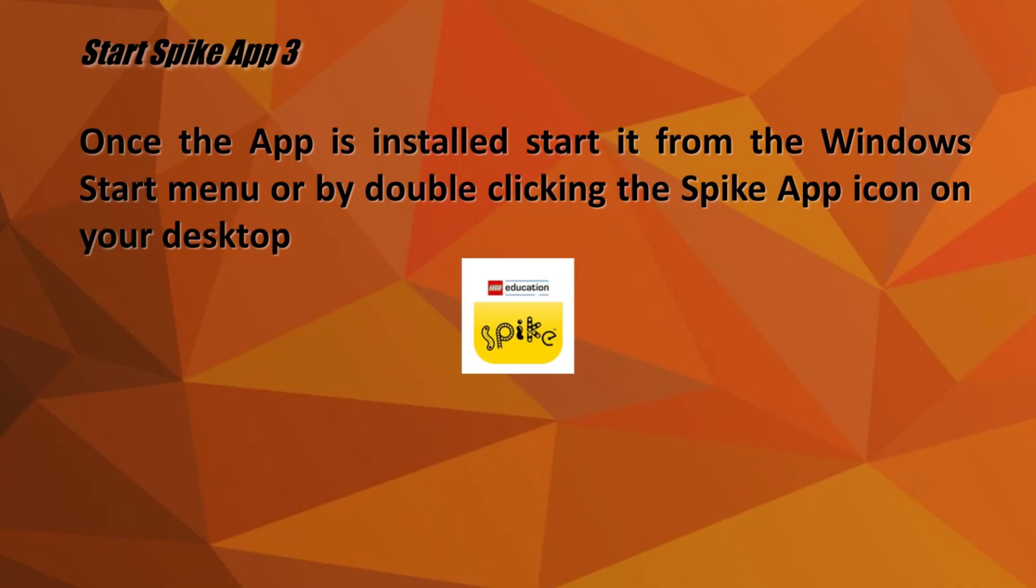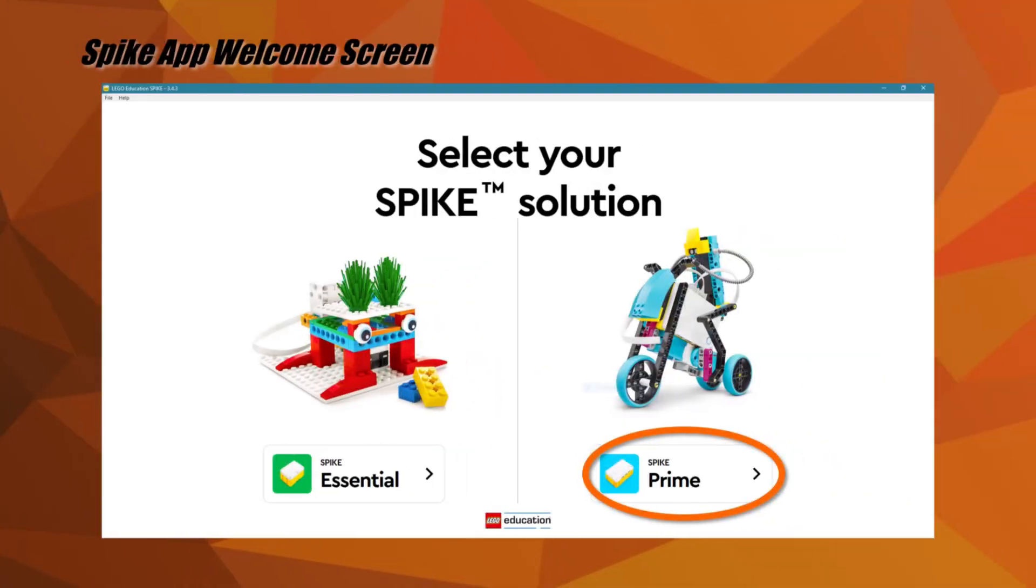Once the app is installed, start it from the Windows Start menu or by double-clicking the Spike App icon on your desktop. When you start the Spike App, it will ask you to select the Spike platform you want to program. Select the Spike Prime on the right side to get to the home screen.